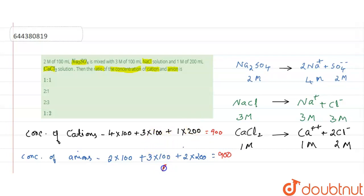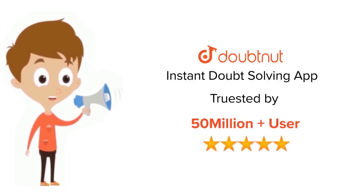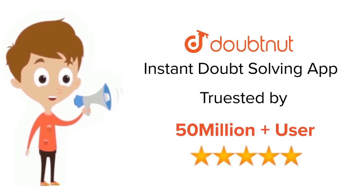Both cations and anions total 900, so the ratio of cation to anion is 1:1. Looking at the options, the first option is 1:1, which is the answer. For class 6 to 12, IIT JEE, and NEET level — trusted by more than 5 crore students. Download the DoubtNet app today.